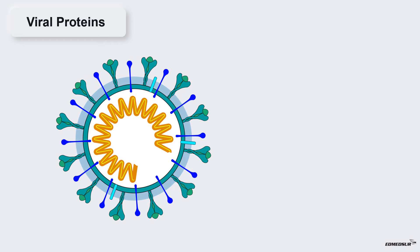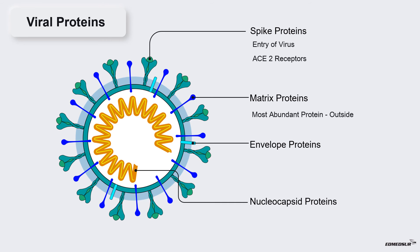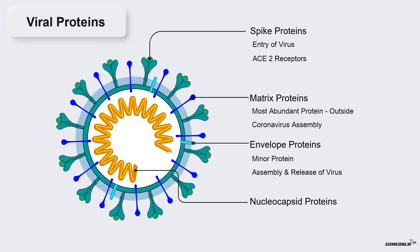SARS-CoV-2 has four structural proteins: spike proteins, matrix proteins, envelope proteins, and nucleocapsid proteins. Spike proteins play an important role during the entry of the virus into host cells by binding with ACE2 receptors on the host cells. Matrix proteins are membrane glycoproteins, the most abundant proteins on the outside of the viral particle; they act as the central organizers of coronavirus assembly and interact with other structural proteins. Envelope proteins are minor proteins that play an important role in assembly and release of the virus from host cells. Nucleocapsid proteins are bound to the viral genome, inhibit many of the host cell's defense mechanisms, and facilitate viral replication.